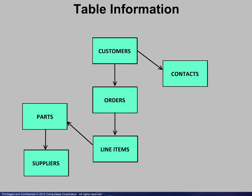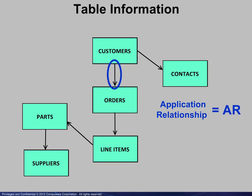This table set has another condition. The customer and order tables are used as if the customer table is the parent table and the order table is the dependent, but that informal relationship is not defined in the DB2 catalog. In this application relationship, or AR, program code is responsible for key verification. The good news is that the relationship facilitator can handle this situation.